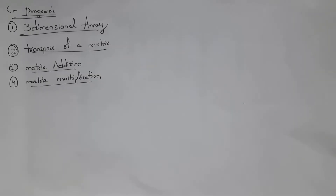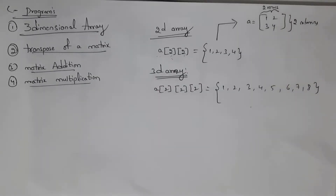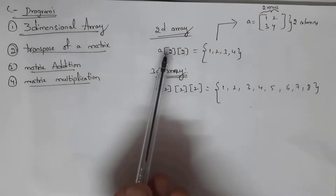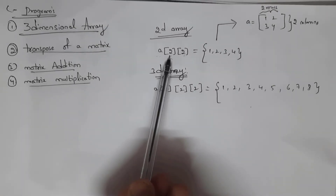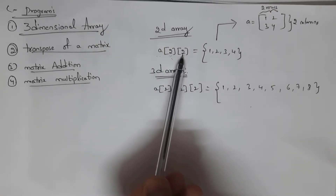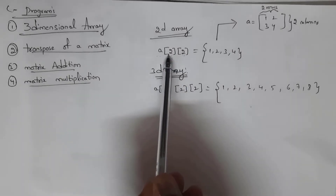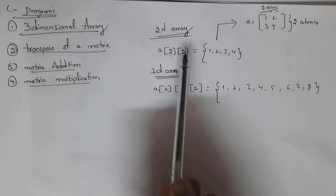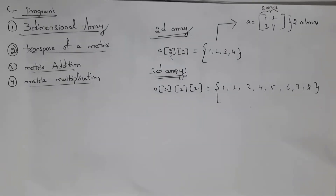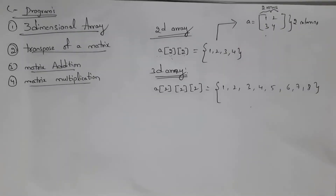Let's get started. First I will explain the program for a three-dimensional array. For example, if you consider a two-dimensional array, it contains only two dimensions where the first dimension represents rows and the second dimension represents columns. That means I can store two by two, that is four elements. This is how a two-dimensional array looks like. But in a three-dimensional array, it contains three dimensions.